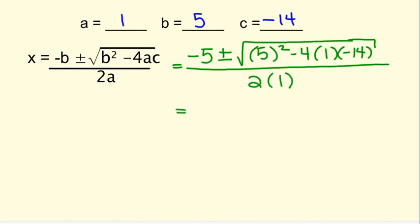And then the rest of the problem is simplify, simplify, simplify. Be careful on your simplifying that you do the correct orders of operation. So I'm going to leave this negative 5 alone, plus or minus. And then underneath the radical, you want to go 5 times 5 is 25.